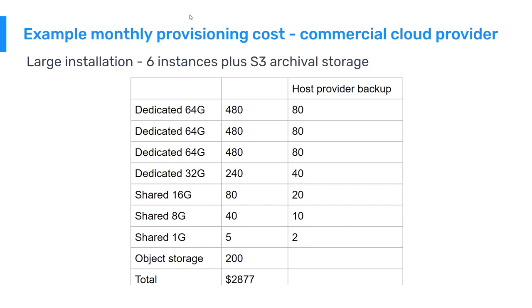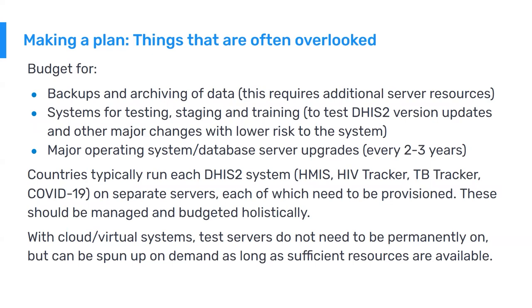Some things are often overlooked when making a budget. It's not just one server running DHIS2 - backups need to be done, stored, and often pushed off-site and archived elsewhere, requiring additional services to be budgeted for. Systems for testing, staging, and training are really important. If you're going to deploy a new version of DHIS2, you need to test it first on another server. You also need training sessions where users access the system - you do not want to be using your production server for this.